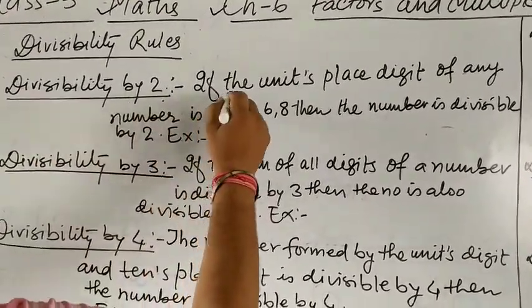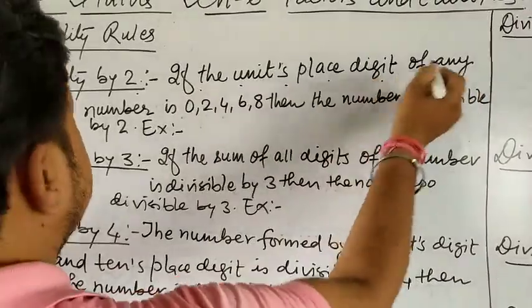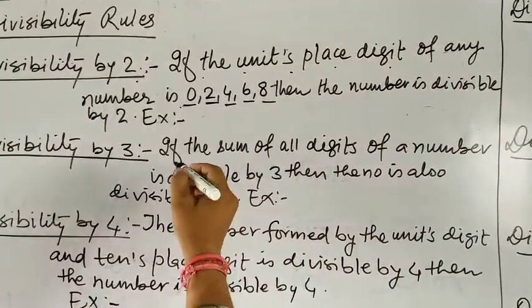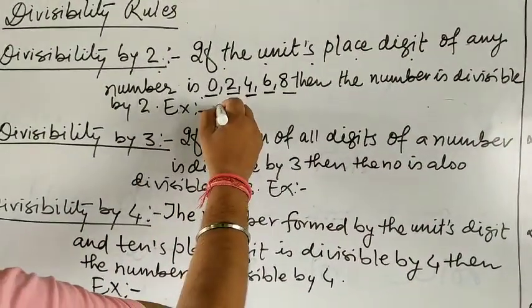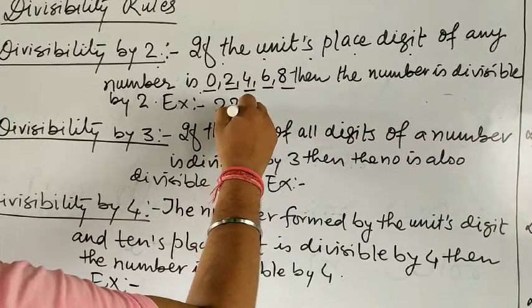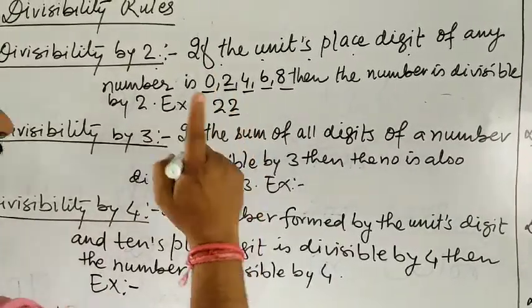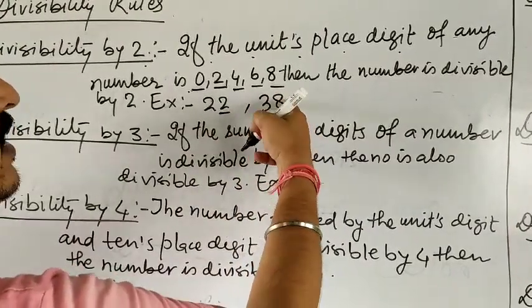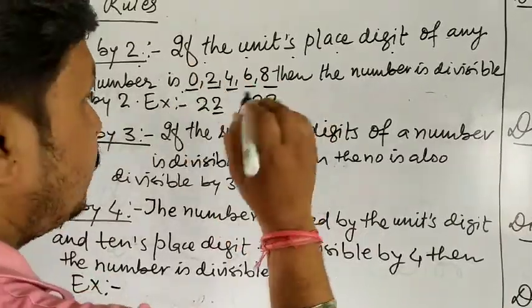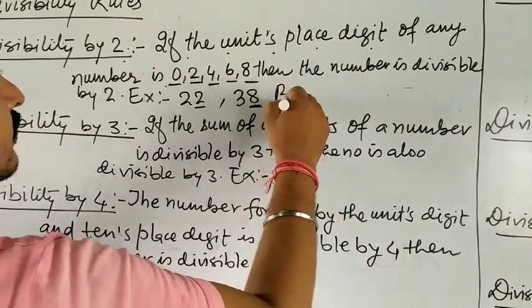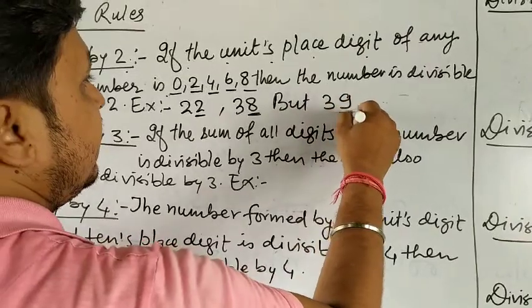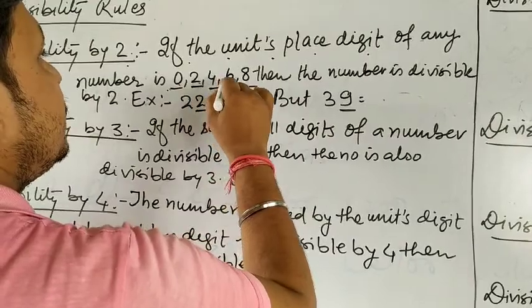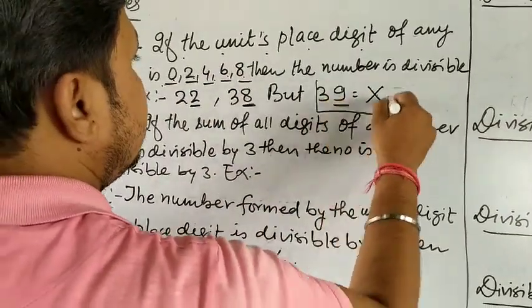Divisibility rule of 2: If the unit's place digit of any number is 0, 2, 4, 6, or 8, then the number is divisible by 2. For example, 22 has unit's place 2, so it is divided by 2. 38 has unit's place 8, so it is divided by 2. But 39 has unit's place that is not 0, 2, 4, 6, or 8, so it is not divisible by 2.